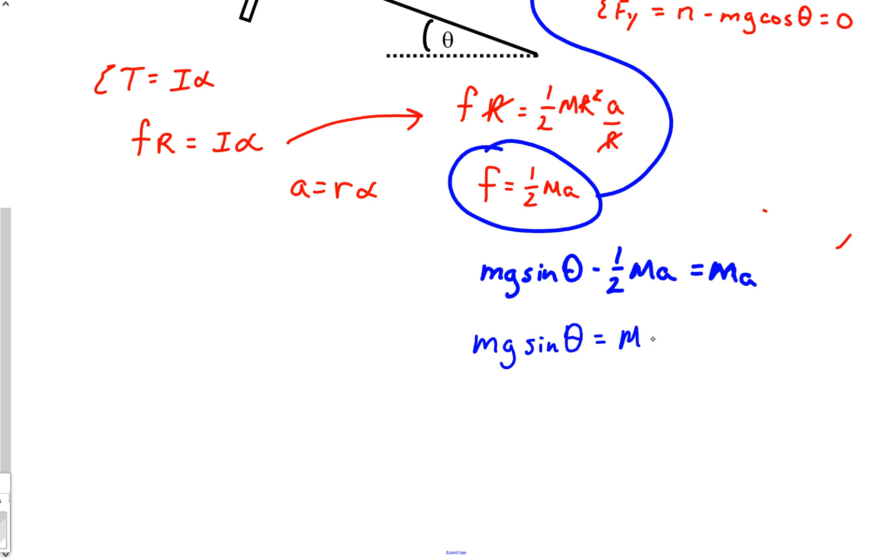...and technically both these should be big M since that was the notation I'm using. So mg sin θ is equal to ma plus one-half ma, and so we end up with mg - and yes I know the m's cancel - three-halves ma. Our m's cancel, so we've got two-thirds g sin θ is equal to a.